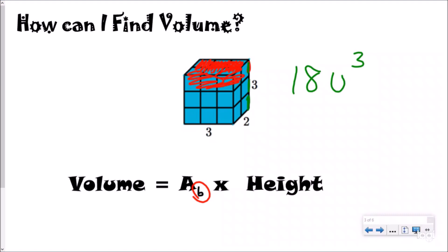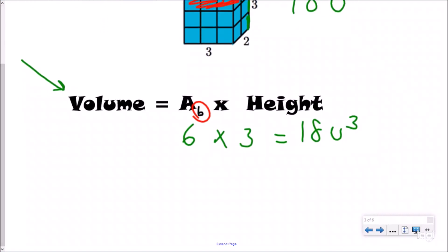So what you just did is you took the area of the base, which is six, and you multiplied it by the height or the layers, which was three, and you got the answer 18 units cubed. So this is our formula for volume, which is something we can use all the time to help us find the volume.